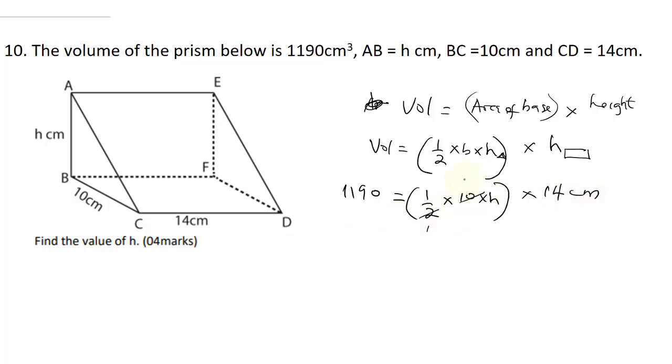2 goes into 1, 2 goes into 1 here, it's going to be 5, so we are going to have 1190 is equal to 5 multiplied by 14, it's going to give us 70, 70h. Therefore, h is going to be 1190 all divided by 70. 0 cancels 0, 119 divided by 7, 17 into 11, you're going to have one whole number, and 17 into 49, you're going to have 7. So this is going to be 17 cm, final answer.